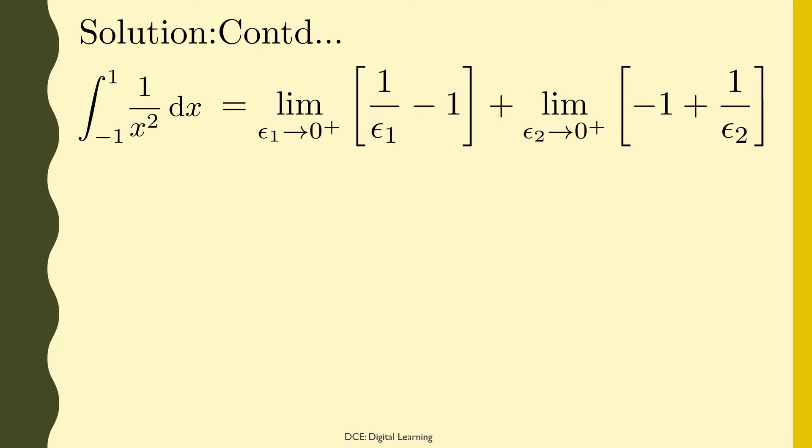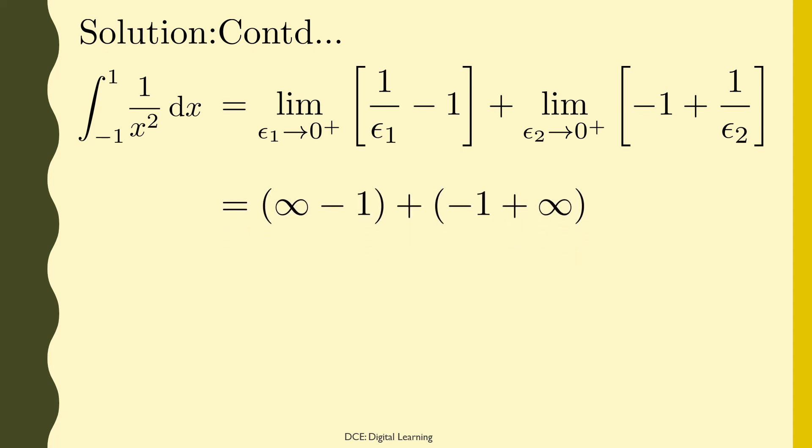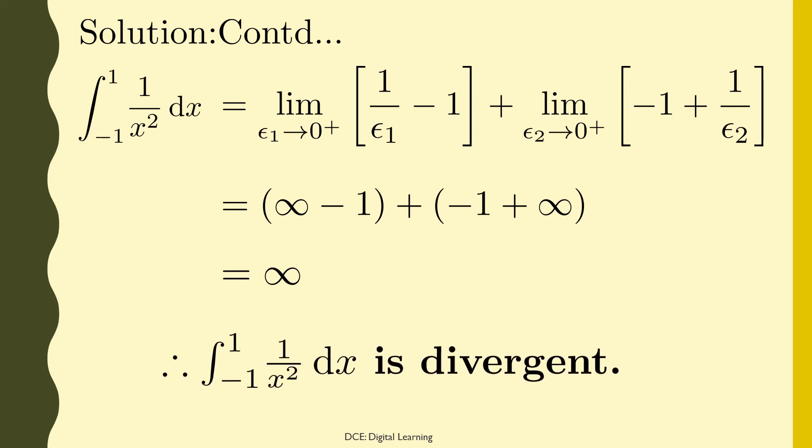This equals infinity minus 1 plus (−1 + infinity), which equals infinity. Therefore, the given integral of 1/x² dx from −1 to 1 is divergent.